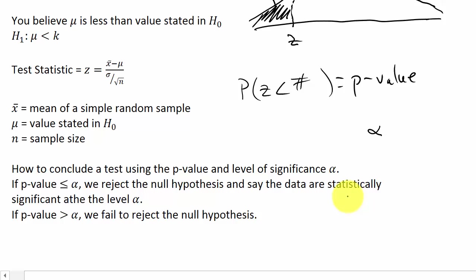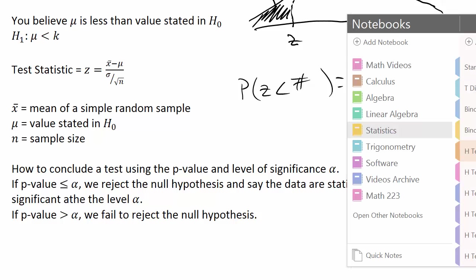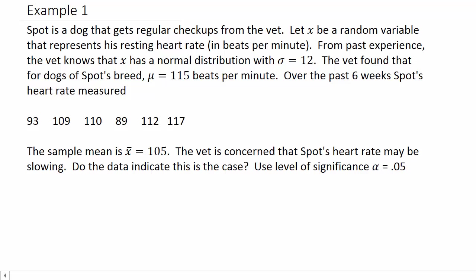Let's take a look at a problem. It says Spot is a dog that gets regular checkups from the vet. Let x be a random variable that represents his resting heart rate in beats per minute. From past experience, the vet knows that x has a normal distribution with sigma equals 12—see they give us the population standard deviation. The vet found that for dogs of Spot's breed, mu is equal to 115 beats per minute.